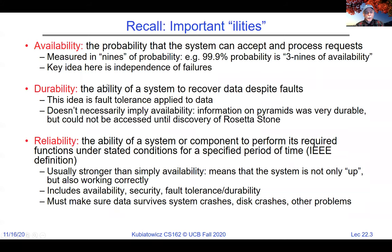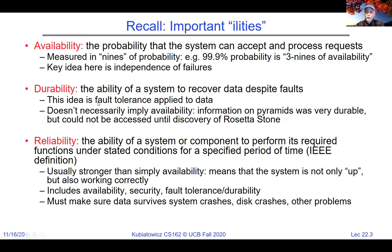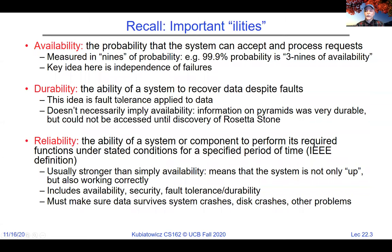The example I like to give about the difference between durability and availability is the Egyptian pyramids. There was a time when people didn't know what the various hieroglyphs meant. What was written on the pyramids was extremely durable, but it wasn't available because people couldn't decipher it, and it became available only after the Rosetta Stone was discovered.